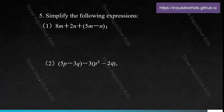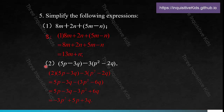Problem 5: simplify the following expressions. The first is 8m plus 2n plus the difference of 5m and n. Since it's a positive bracket, just remove the brackets without changing signs, then combine like terms to get 13m plus n. The second is 5p minus 3q minus 3 times the difference of p squared and 2q. Factor the negative 3 in using the distributive property to get negative 3p squared plus 5p plus 3q.